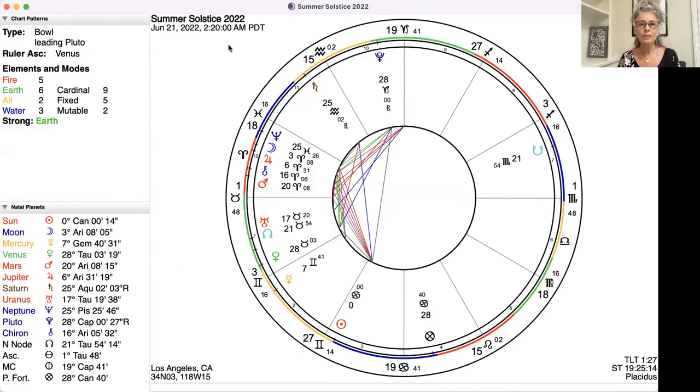So I'd like to share the solstice chart with you. Let me share my screen. I created this chart for Los Angeles because this is where I live, but it doesn't really matter. Wherever you live, it's going to be the same energy because the planets are going to be the same. The houses may change because of the location of where you are, but we're not going to talk about houses. We're just going to talk about the energies of the planets and the aspects they are creating.